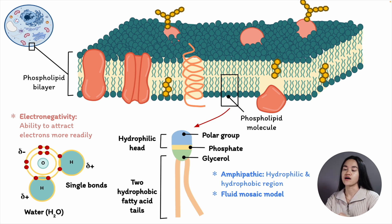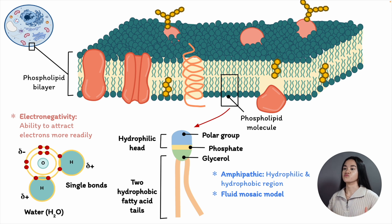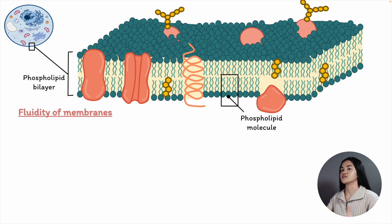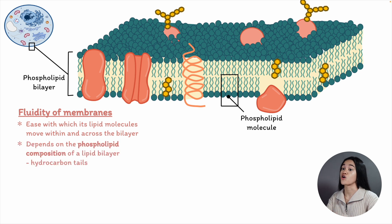Nothing prohibits membrane lipids from moving around and swapping places with one another within the plane of the membrane. Despite the fact that the aqueous environment prevents them from leaving the bilayer, individual lipid molecules are able to move within their own monolayer. As a result, the lipid bilayer acts as a two-dimensional fluid and is also flexible. For a cell membrane to function properly, its fluidity — the ease with which lipid molecules move within and across the bilayer — must be maintained within specific limits. How fluid a lipid bilayer is depends on the phospholipid composition, specifically the structure of the hydrocarbon tails.